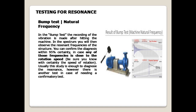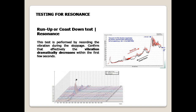Testing for resonance — Bump test or natural frequency test: in the bump test, a recording of vibration is made after hitting the machine. In the spectrum you will then observe the resonant frequencies of the structure. You can confirm the diagnosis with approximately 95% certainty if any of those frequencies is close to the rotation speed — be sure you know the speed of rotation with certainty. Usually this study is enough to diagnose resonance; however, there is another confirmatory test available.